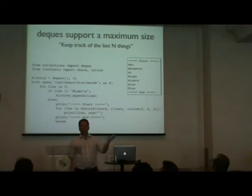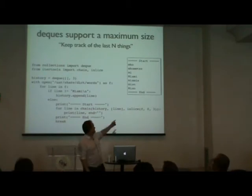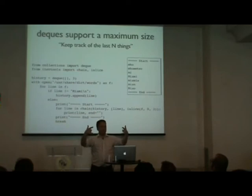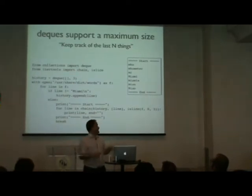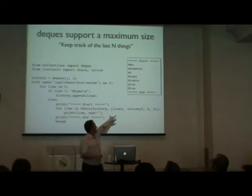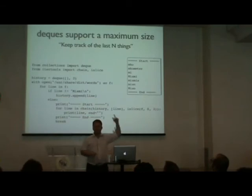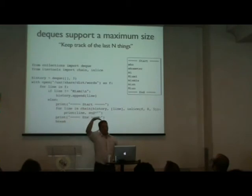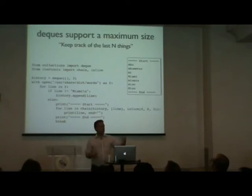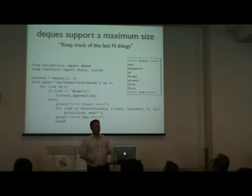Here's a grep-like program that shows context lines. I search for 'Miami' and want to show the three lines before and three lines after. I process each line: if it doesn't match, I append it to a history deque of size 3. When I find 'Miami', I use itertools.islice to get the previous three lines, the matching line, and the next three — chaining them together. The collections module, lists, iterators, and itertools all work nicely together.